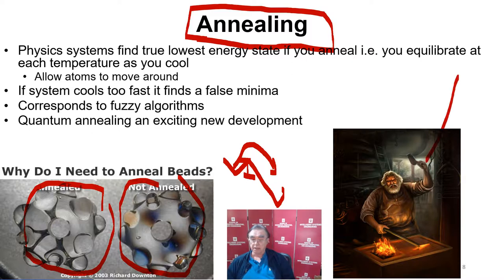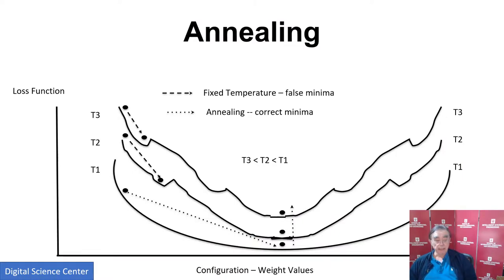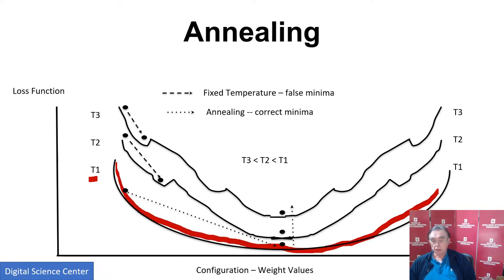This blacksmith is a classical annealer, and D-Wave has quantum annealing — even better. Here is a plot from around the same time showing the loss function at various temperatures. As you make the temperature higher and higher — T1 is the highest temperature — you smooth out the energy function. When kT is bigger than the height of a false minimum, it gets smoothed out. As kT gets bigger and bigger, all the false minima disappear and we only see the global minimum. That's the origin of the physics methods for doing optimization.